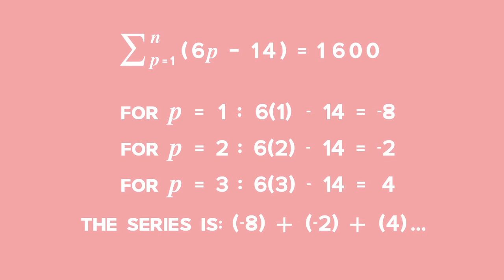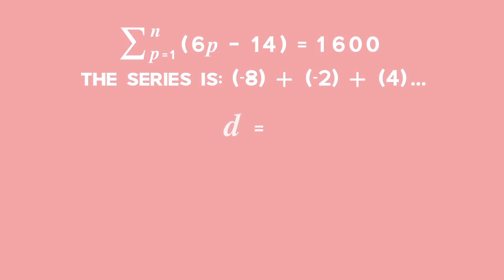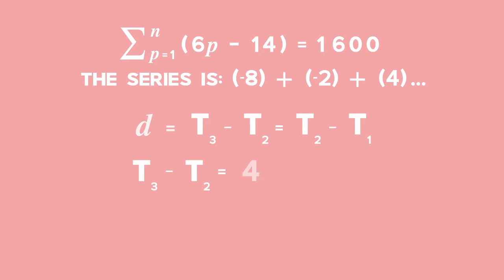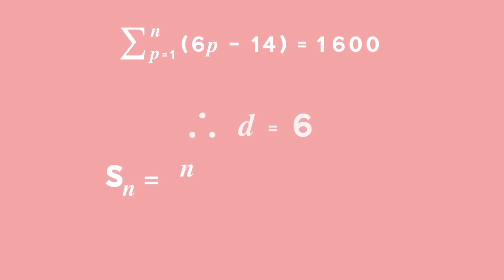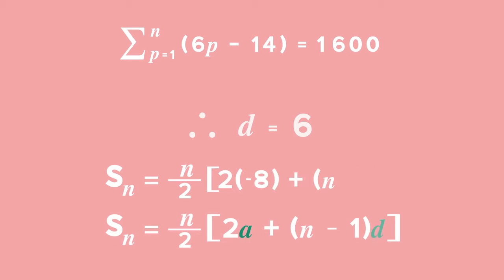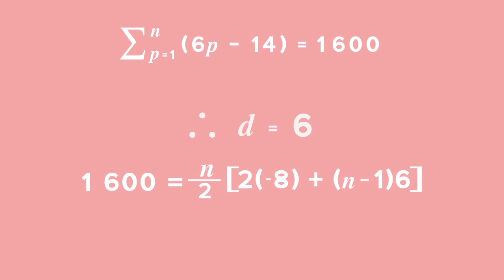Next, we check for d, the common difference. D equals term 3 minus term 2, and also term 2 minus term 1. Term 3 minus term 2 equals 4 minus negative 2, which equals 6. Term 2 minus term 1 equals negative 2 minus negative 8, which also equals 6. Therefore, d equals 6. Using the formula for the sum of an arithmetic series and substituting values for a, d, and Sn, we can calculate n.